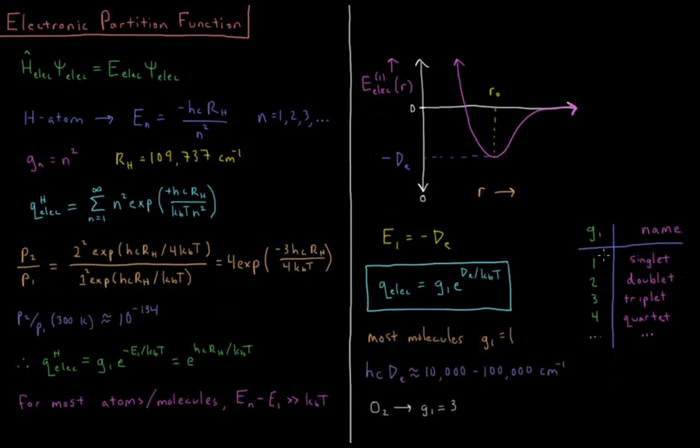We also care about the degeneracy of the molecule. Most typical organic molecules are singlet ground states. All of the electrons are paired, they're what we call a singlet. If you have a single unpaired electron, that'll be a doublet. Two unpaired electrons will generally be a triplet, et cetera. Most molecules are going to be singlets in their ground state, so we have G1 equals one for most cases.